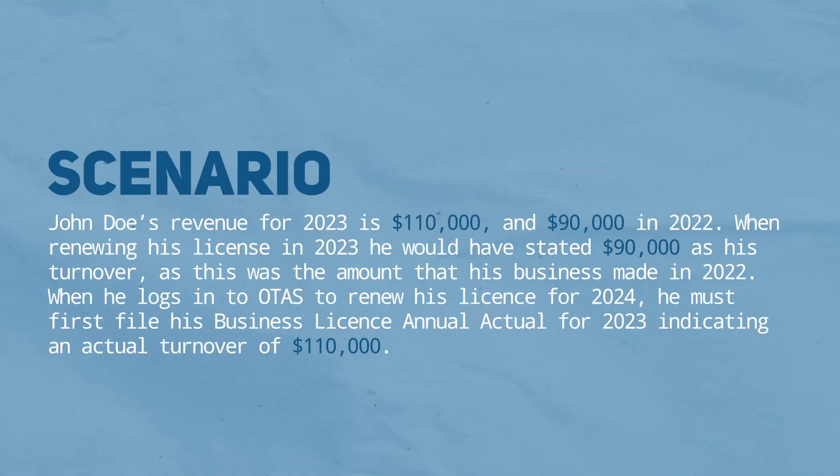Here's a scenario of BLAA and BLAE. John Doe's revenue for 2023 is $110,000 and $90,000 in 2022. When renewing his license in 2023, he would have stated $90,000 as his turnover, as this was the amount his business made in 2022.